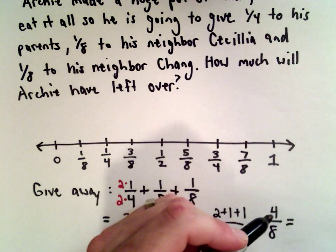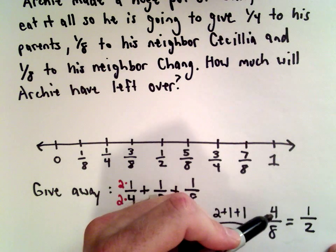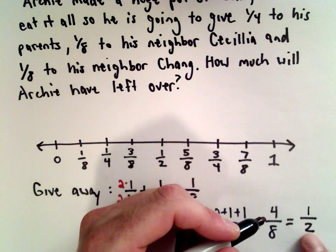So we've got four over eight. And now we can reduce this. So four over eight will be the same thing as one-half. And again, I'm getting that because I can say, well, four divided by four would be one. Eight divided by four would be two.